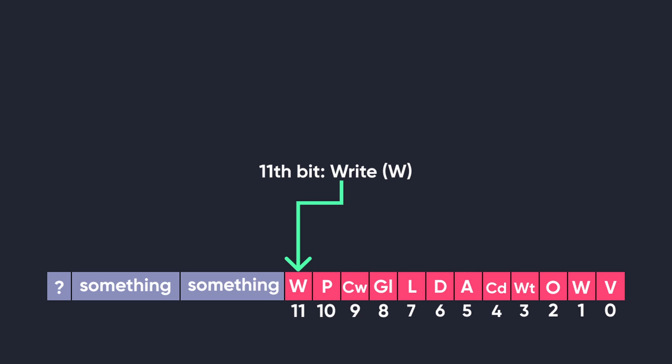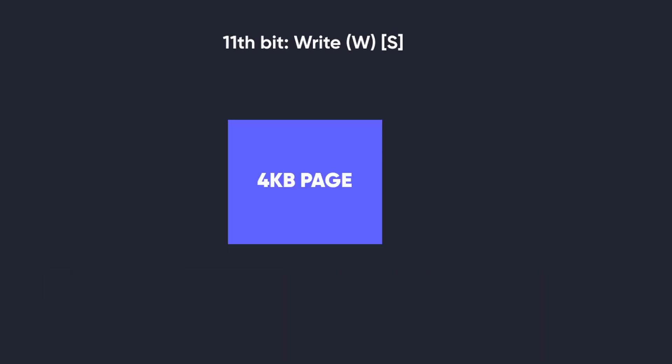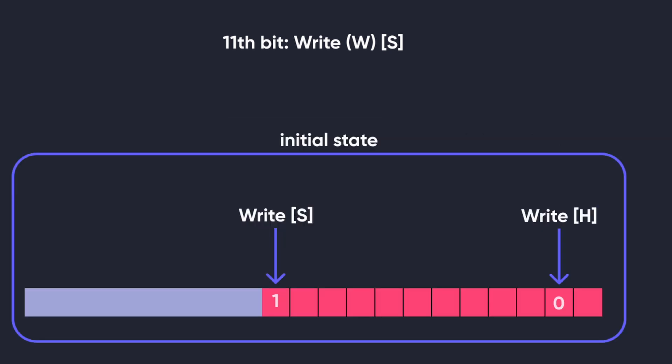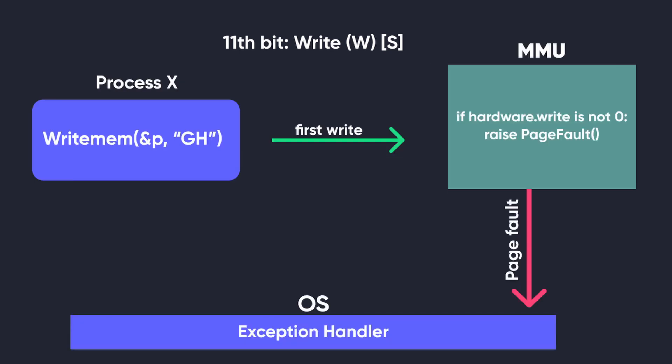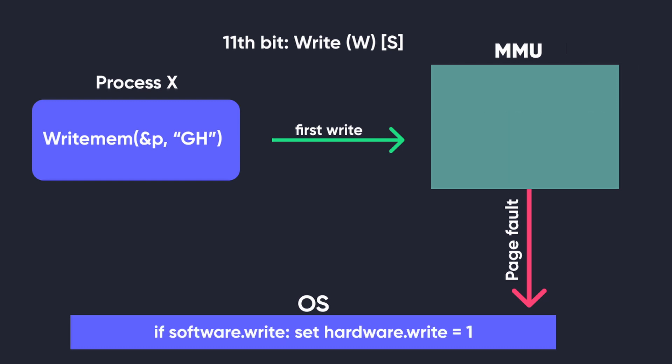The eleventh bit is the write software bit, and this requires some explanation. Consider a normal 4KB page that is writable. When the page is initially created, the write software bit is set to 1 and the write hardware bit remains 0 by default. When the first write operation occurs, the MMU checks if the write hardware bit is set. If it is not set and a write request has been made, it raises a page fault exception. The operating system's exception handler checks if the software write bit is set — and since it is 1 — it also sets the hardware write bit to 1 and continues the write operation. This mechanism has everything to do with how multiprocessor systems work, which is beyond the scope of this video.